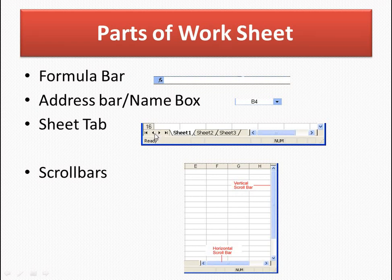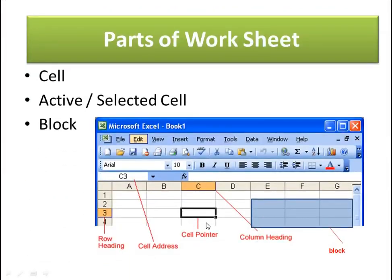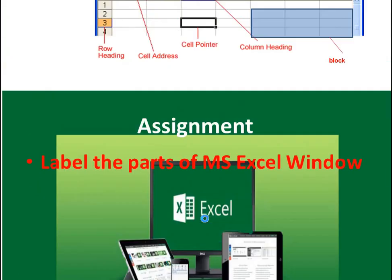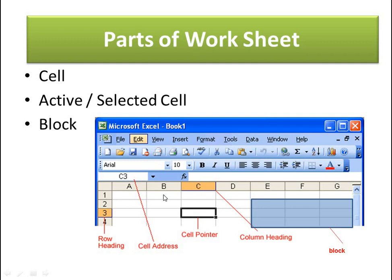The intersection of a row and a column is called a cell. An active cell or selected cell is identified by the cell pointer — a rectangular black-colored box. You identify a cell by its column heading and row heading; for example, the cell pointer in column C and row 3 is called C3 — that is the active cell. A group of cells selected together forms a block.